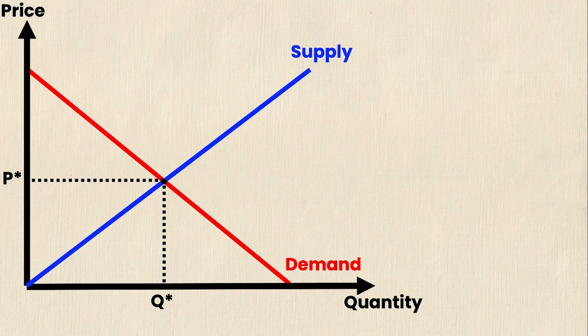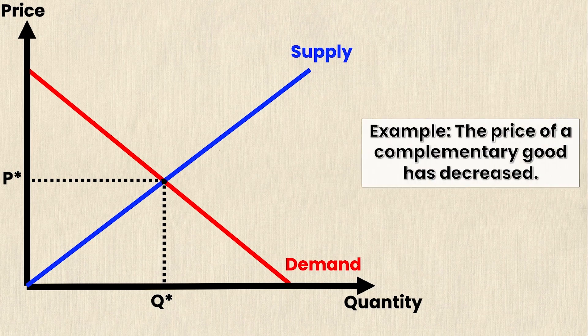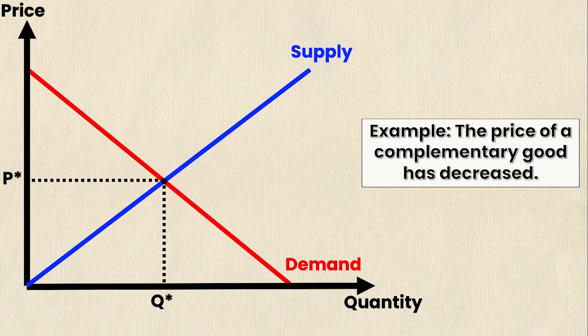Now we need to take a look at a demand shift factor. So here I have an example: the price of a complementary good has decreased. We know that the price of related goods in consumption, so complements and substitutes, will shift the demand curve left and right when their prices change. In this case the price of a complementary good is decreasing which is going to shift my demand to the right.